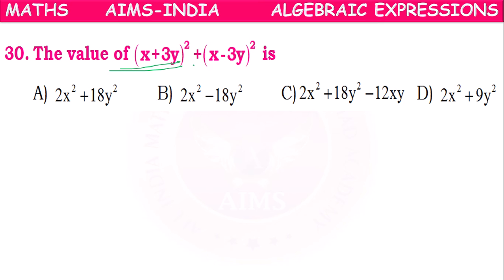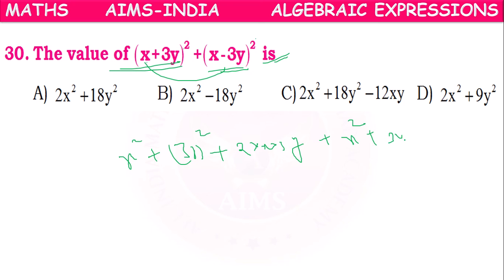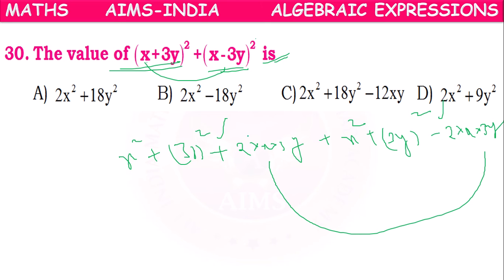Next: (x + 3y)² + (x - 3y)² how much? Expanding: (x + 3y)² = x² + 9y² + 6xy, and (x - 3y)² = x² + 9y² - 6xy. The 6xy terms cancel, giving x² + x² = 2x², and 9y² + 9y² = 18y². So the answer is 2x² + 18y². Option A is correct.